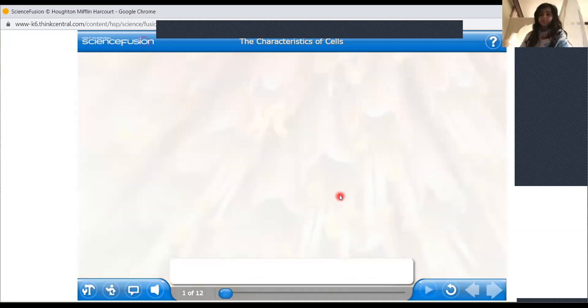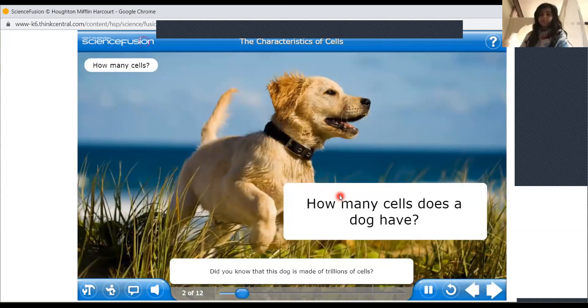So, let us go to the other slide. This dog is made of trillions of cells. Okay. One more thing I told you. What is the difference between atom and cell? When I say cell, can I say that cell is present in the water bottle? No.